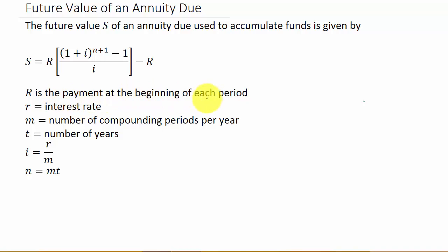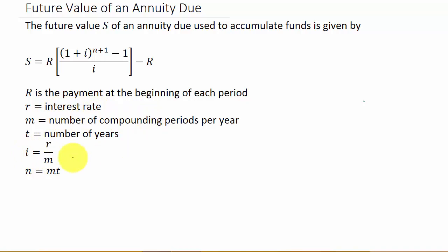R is the payment at the beginning of each period. Little r is your interest rate. M is the number of compounding periods — annually M equals 1, semi-annually M equals 2, quarterly M equals 4, monthly M is 12, and daily M equals 365. T is the number of years. I is r over M — the interest rate divided by the number of compounding periods. And N is M times T — the number of compounding periods times the number of years.